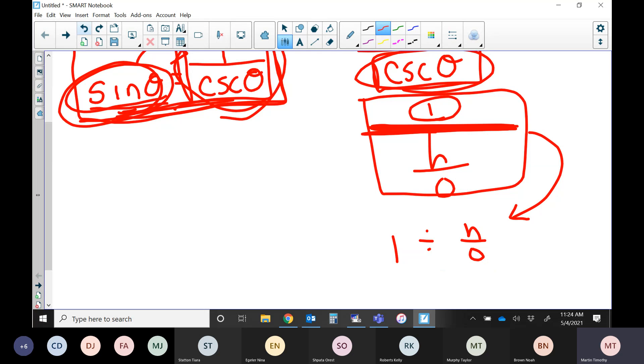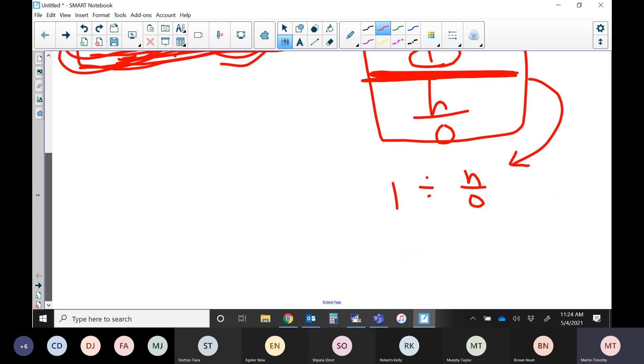Now, the reason I wrote it like that is because, hopefully you remember, we don't like to divide by fractions. What do we do instead? Keep, change, flip. Keep, change, flip. And this turns into 1 times O over H. And what is anything times 1? Well, anything times 1 in itself. So this is just O over H. And if you go back to the top, what is O over H equal to? O over H is really the sine of theta.